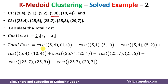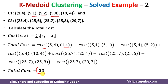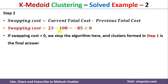The total cost of this assignment includes: cost from (5,4) to (1,4), (5,1), (5,2), (10,4), and cost from (25,7) to all data points in its cluster. After solving, the total cost equals 23. We then calculate the swapping cost: current total cost − previous total cost = 23 − 108 = −85. Since the swapping cost is negative, the current total cost is less than the previous, meaning the current assignment is better.